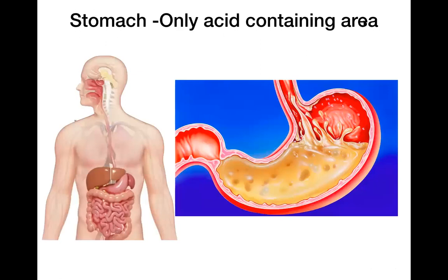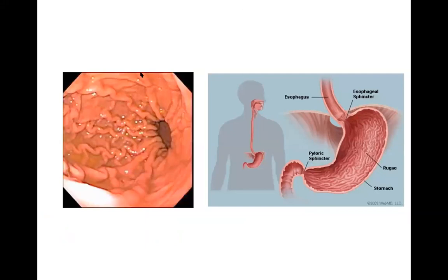The stomach is the only acid-containing area of the entire gastroesophageal tract, and this acid is relatively strong — if it falls onto a surface it can erode it. Yet the stomach is largely protected from this acid, as we will see subsequently. This is the gross upper GI endoscopic image of the stomach showing the rugal folds visible through the endoscopic camera. A normal stomach visualized through a camera will look like this with the presence of rugal folds.